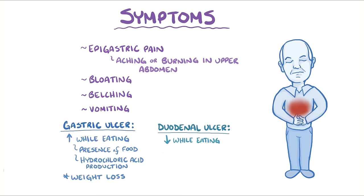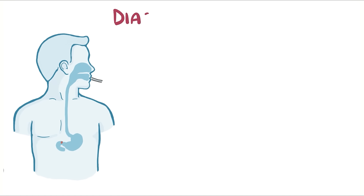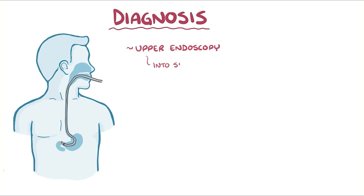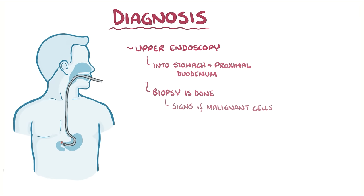Peptic ulcers can be diagnosed with upper endoscopy, which is when a tube is snaked through the esophagus, into the stomach, and then the proximal duodenum in order to see the ulcer itself. Usually during the procedure, a biopsy is done to make sure that there are no signs of malignant cells and to check for signs of H. pylori infection.